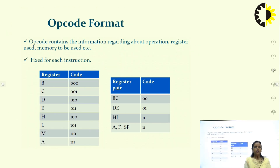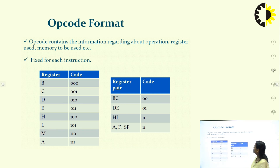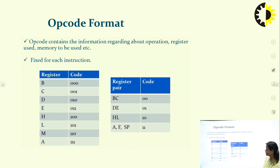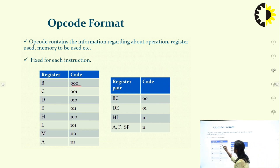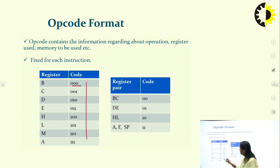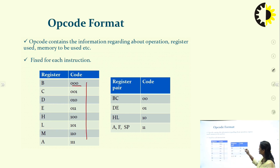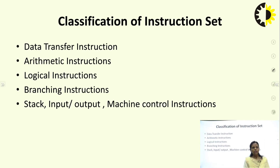Now, coming to the opcode format. The opcode contains information regarding the operation, register used, and memory to be used. These are fixed for each instruction. For register B the code is 000, for C it is 001, and likewise different codes are assigned to different registers. Separate codes are used for register pairs.